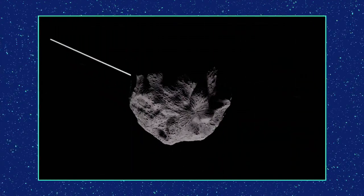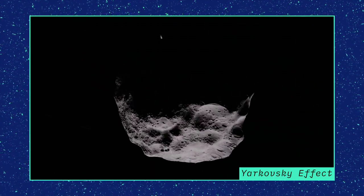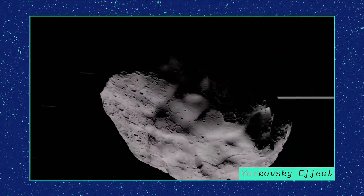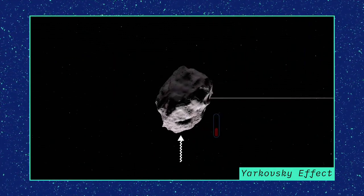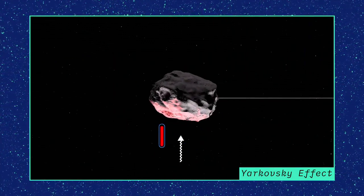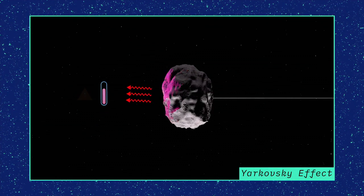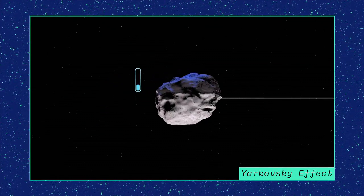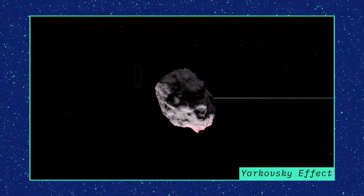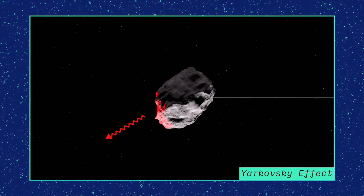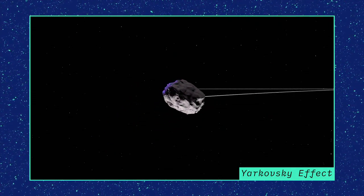In addition to gravity, asteroids can be pushed around by non-gravitational forces, like the Yarkovsky effect. When sunlight strikes a rotating asteroid, the day side heats up. As the asteroid turns, the night side cools down and releases the heat. This exerts a small thrust on the asteroid, which can change its direction over time.